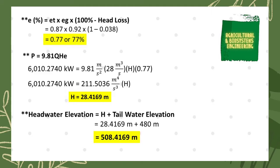We have 6,010.2740 kW equal to 211.536 m⁴ per cubic second times the turbine net head H. Dividing both sides, we obtain the turbine net head H equal to 28.4169 meters.